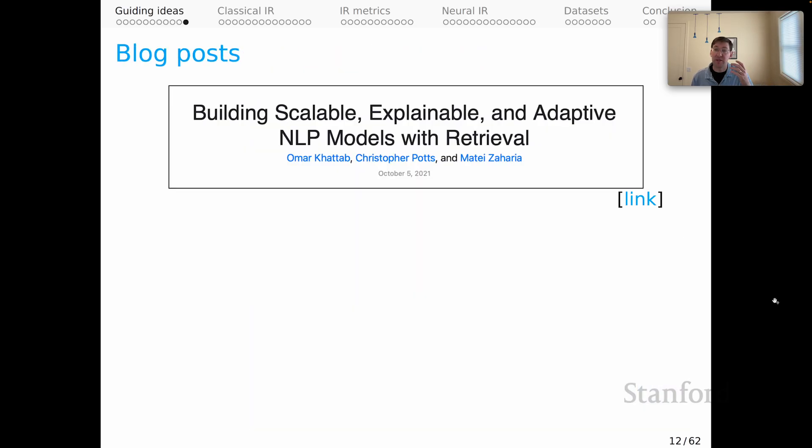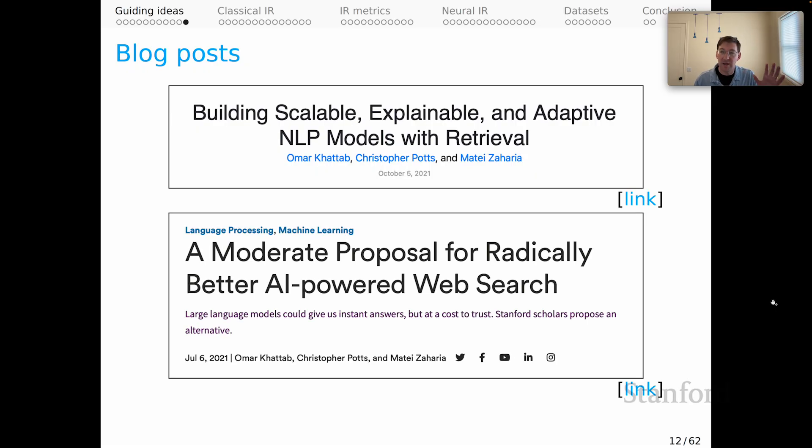That sets the stage. If you would like a little bit more on this, Omar Matei Zaharia and I did two blog posts on this a few years ago that I think remain still extremely relevant. The first is building scalable, explainable, and adaptive NLP models with retrieval. That's a kind of technical blog post. And a more high-level, outward-looking one is this modest proposal for radically better AI-powered web search where all the way back in 2021, we were emphasizing the importance of provenance for information and ground truth in documents as an important aspect of doing web search, even with big, powerful, fancy, large language models. And that is the vision that we're going to try to project for you throughout this unit and with our homework.